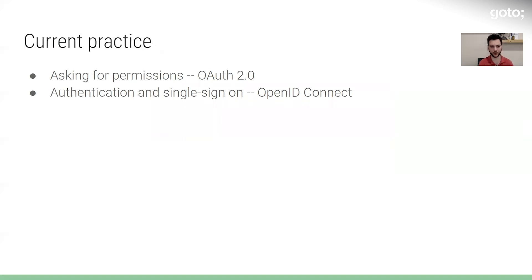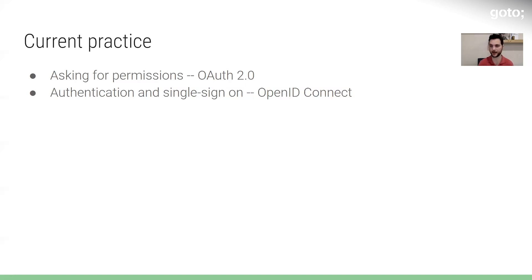That brings us to the current practice where OAuth 2.0 is still widely in use for the thing it was designed for — asking for authorization between different systems. And now OpenID Connect is being widely adopted for the authentication piece: signing users in, or doing single sign-on across multiple websites. Google even rewrote their 'Sign in with Google' functionality using OpenID Connect, as it should be, instead of the old way they were doing it with OAuth 2.0.